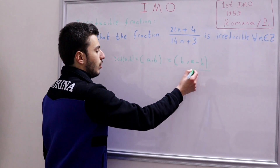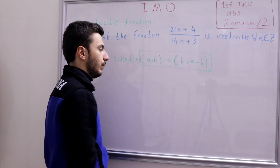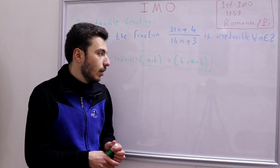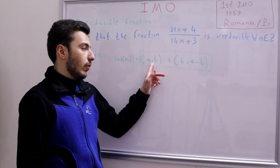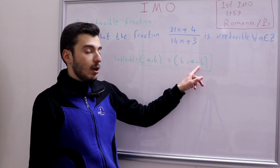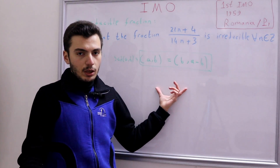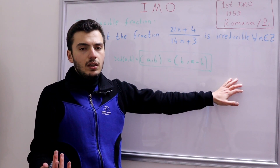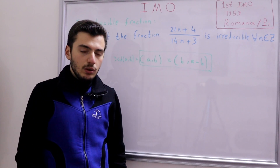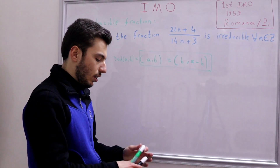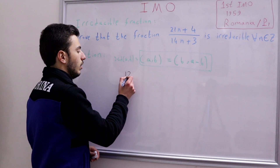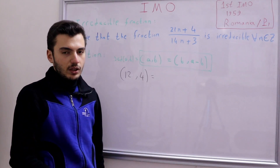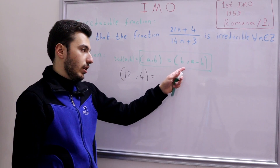This is a recursive or iterative property — we can find the GCD of a and b using the GCD of b and (a minus b). If we apply this smartly we will always arrive at the GCD of the two numbers. Let's demonstrate with a simple example: the GCD of 12 and 4, which is obviously 4.